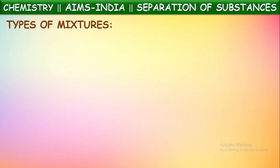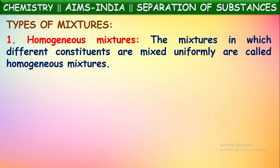How many kinds of mixtures are there? Mixtures are of two kinds based upon the composition of the components in them. Mixtures can be classified into two types. One of them is homogeneous mixtures — the mixtures in which different constituents are mixed uniformly are called homogeneous mixtures.